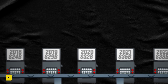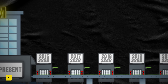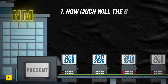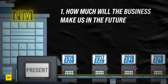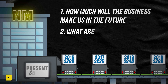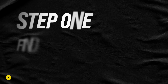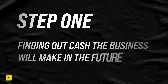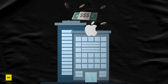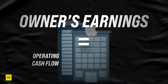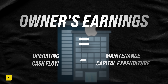With that in mind, as potential new owners of this money printing machine we need two big pieces of information: firstly, how much cash will the business make for us in the future, and secondly, what those future cash flows are actually worth to us sitting here today. So step one — finding out how much cash the business will make. First we have to understand how much money the business is making for its owners right now, also known as the owner's earnings, which is operating cash flow minus maintenance capital expenditure.